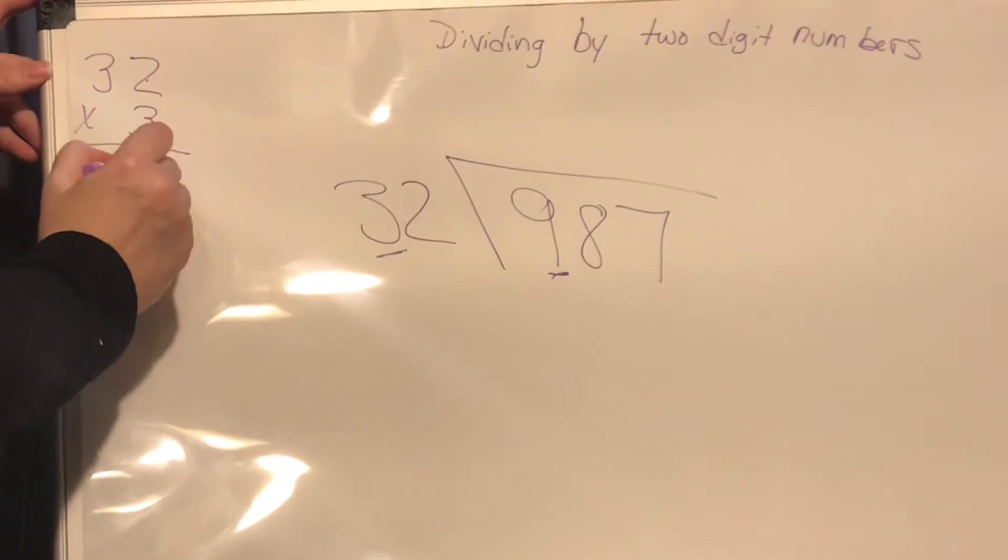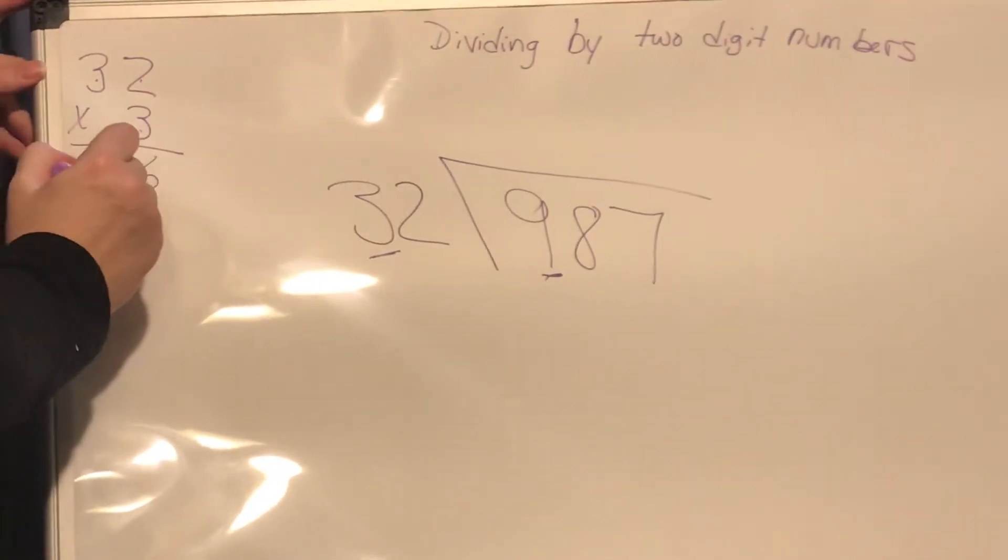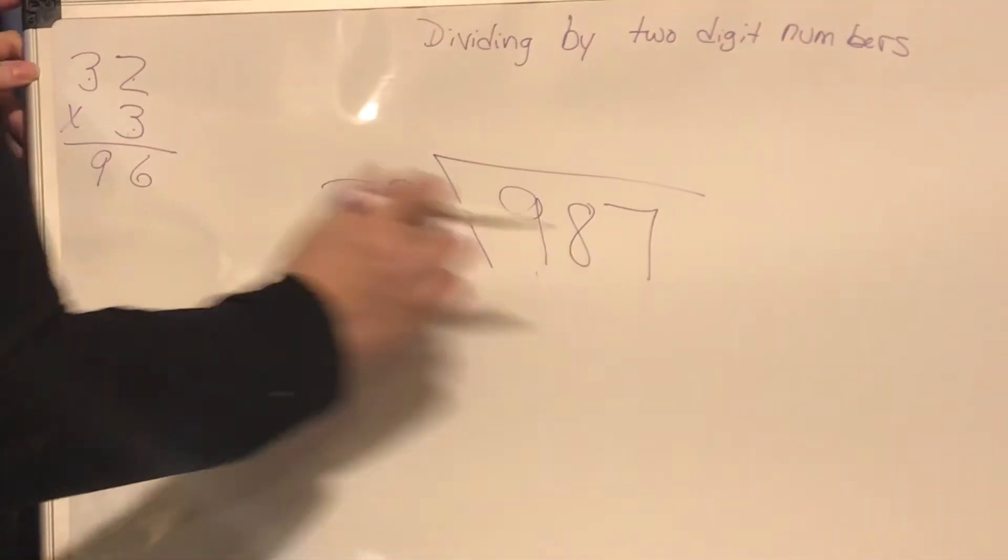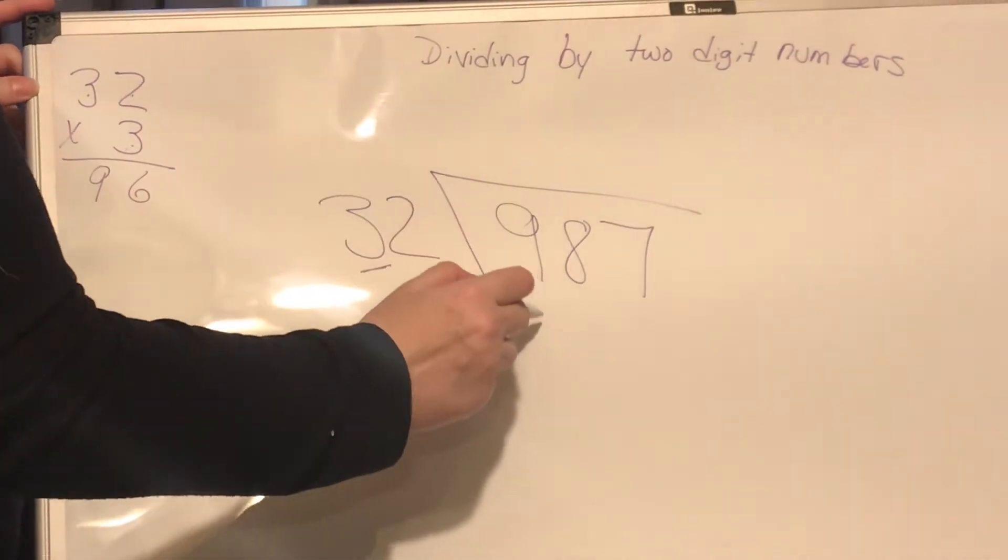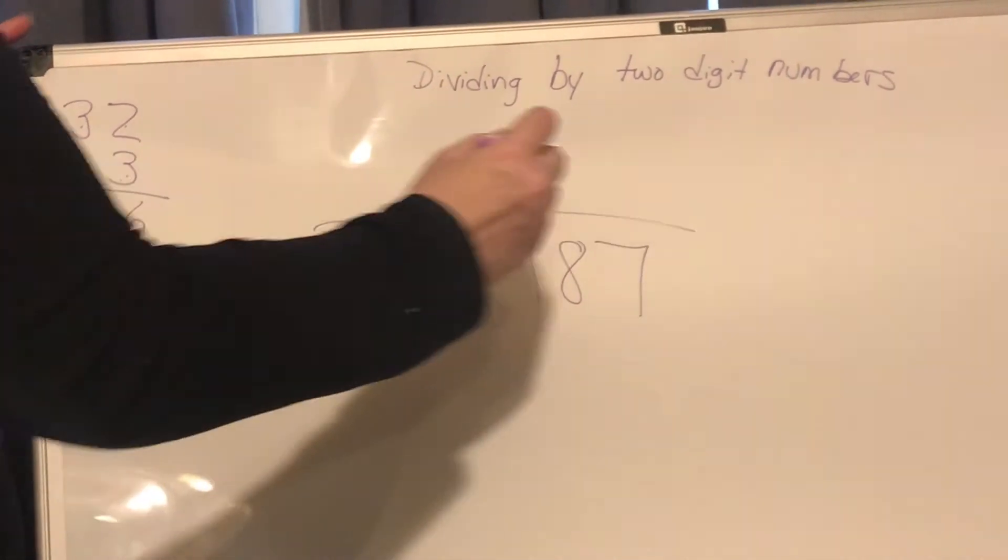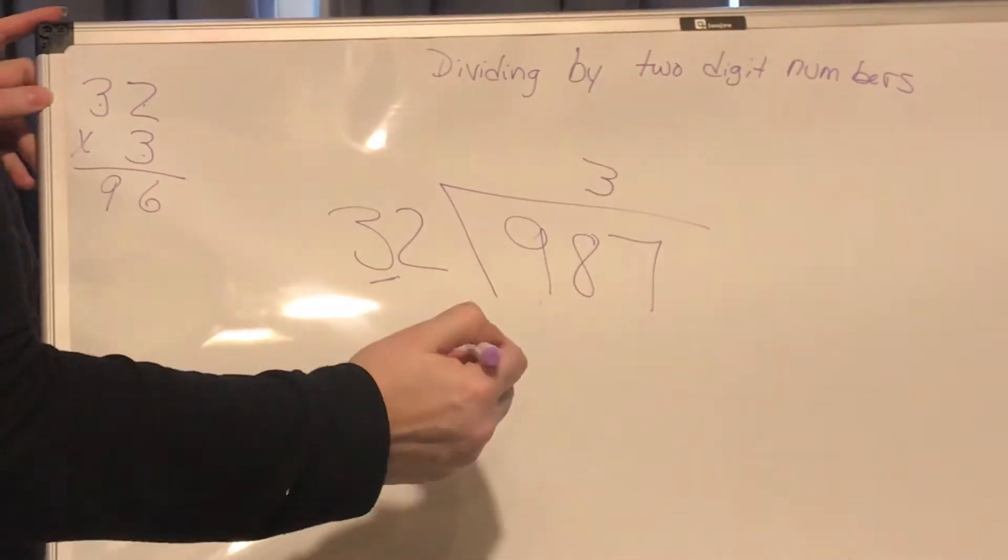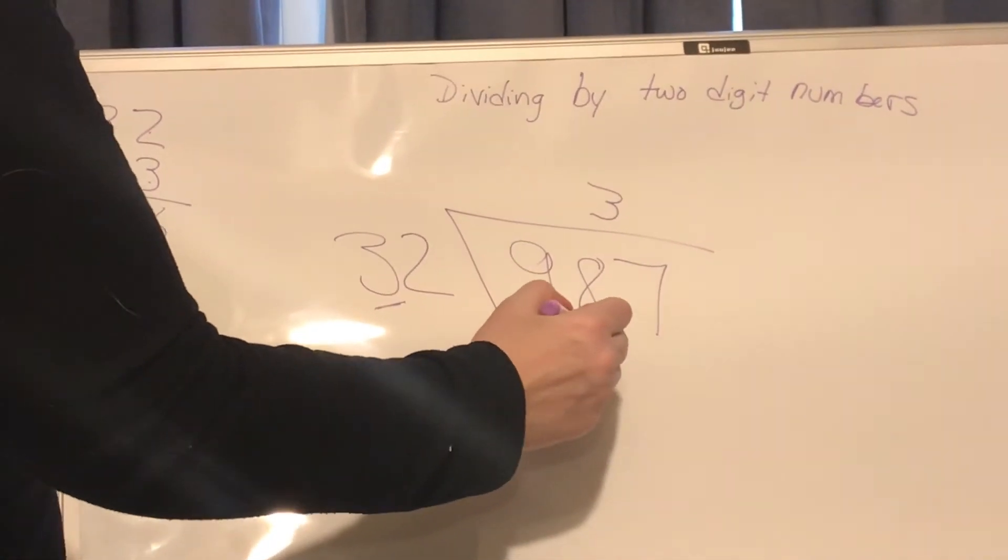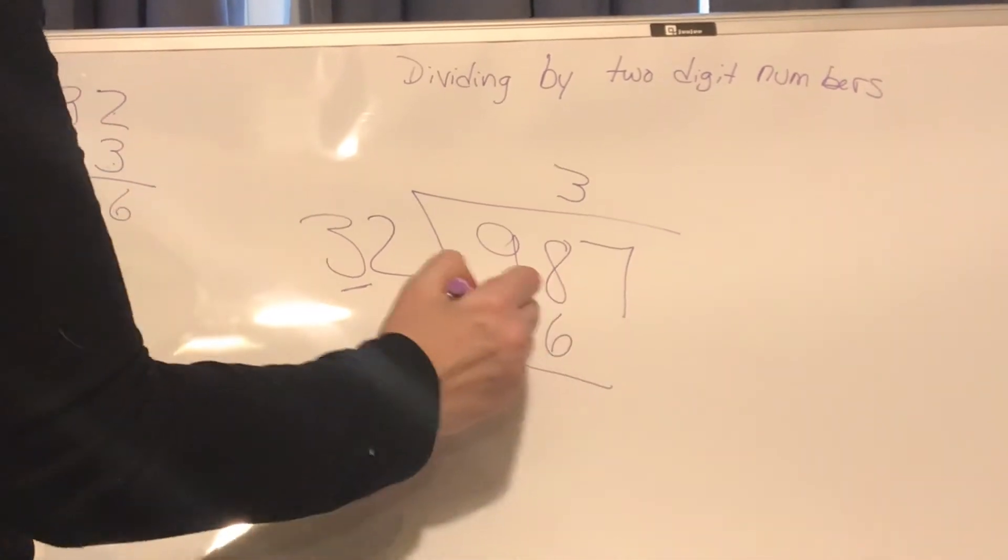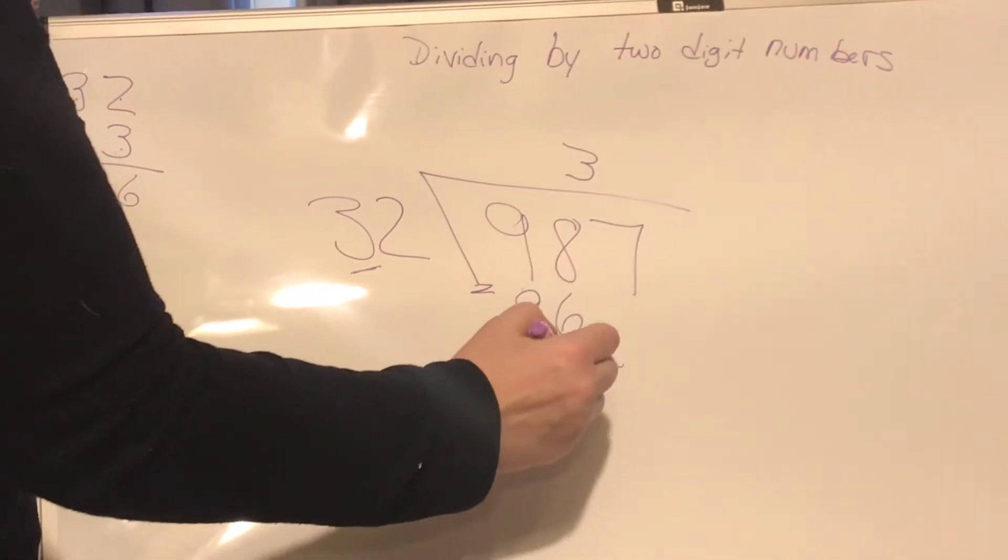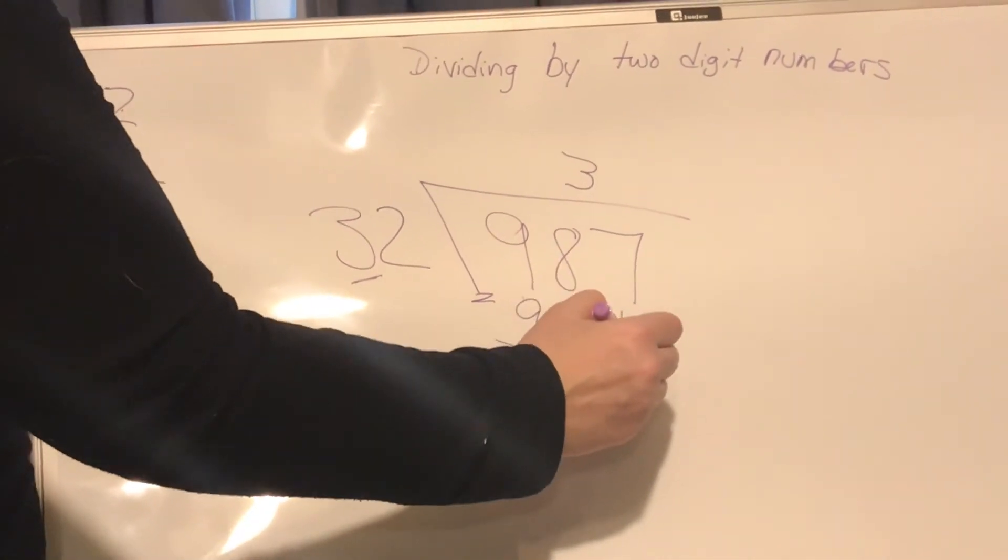3 times 2 is 6, and 3 times 3 is 9, and look at that. So it's 96, which is less than 98, so I can use that. I'm using the 3, putting it right above the 8. 96, subtracting it, which is 2, and I'm bringing down the 7.